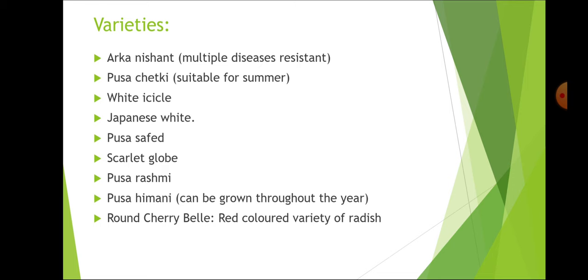White Icicle is a European or temperate type of variety. Japanese White is an Asiatic variety and is less pungent or sweet in taste. Then we have Pusa Safed, Scarlet Globe which is again a temperate variety, Pusa Rashmi which is Asiatic, Pusa Himani which can be grown throughout the year and is a temperate variety, and Round Cherry Belay which is a red-colored variety of radish.